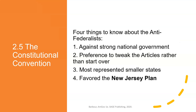The Anti-Federalists didn't want a strong national government. They wanted to keep a weaker central government and focus more on states' rights. They focused on what were called the smaller states, and this was called the New Jersey Plan. These two competing forces had to figure out how they were going to work together to decide what they were going to do.